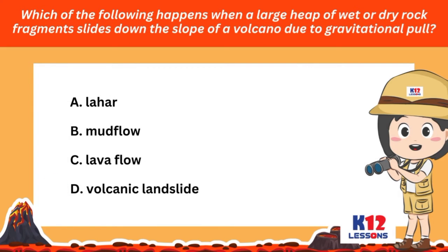Which of the following happens when a large heap of wet or dry rock fragments slides down the slope of a volcano due to gravitational pull? A. Lahar. B. Mud flow. C. Lava flow. D. Volcanic landslide.